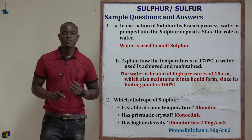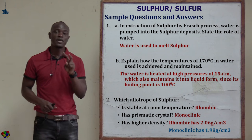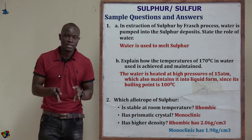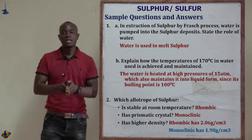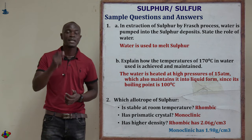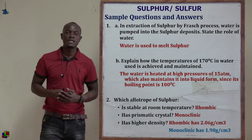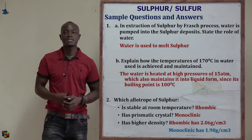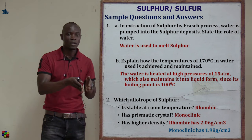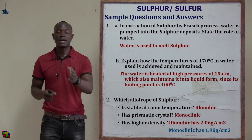Question number two asks: which allotrope of sulfur is stable at room temperature? We have two crystalline allotropes — rhombic sulfur, which is stable below 96 degrees Celsius, and monoclinic sulfur, which is stable above 96 degrees Celsius. Room temperature ranges between 23 to 27 degrees Celsius, so the answer is rhombic sulfur.